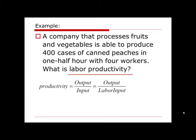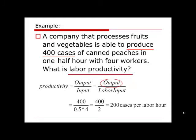With the definition, productivity is defined as output divided by labor input. The output is given as 400 cases of canned peaches produced during the time period. We only need to figure out the labor input. Some people may think: we have four workers, so should I just use 400 divided by four and get 100?